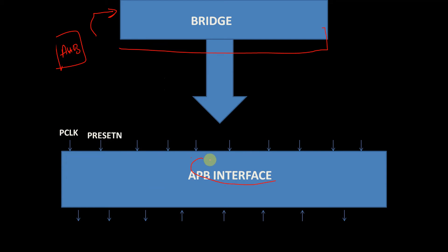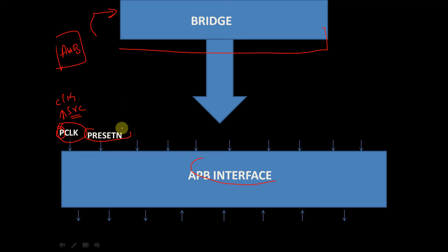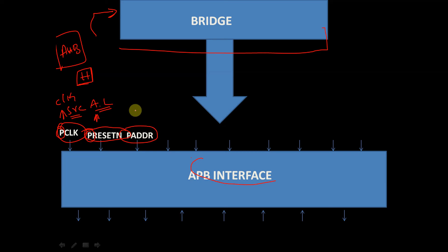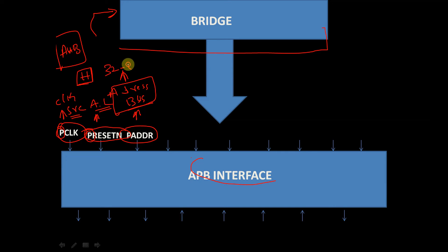Now let's look at the signals associated with the APB interface. We have PCLK, which is our clock source. Every signal is prefixed with 'P' representing the APB interface — in AHB, signals start with the letter H. Next, PRESET_N is an active low reset. Then we have PADDR, the address bus, which carries the address information and can be up to 32 bits wide.